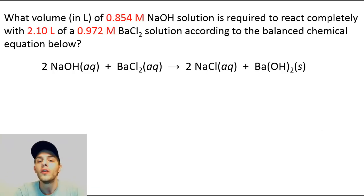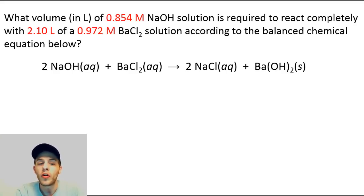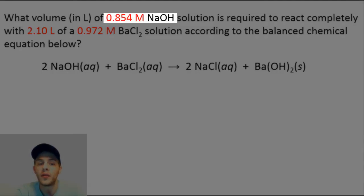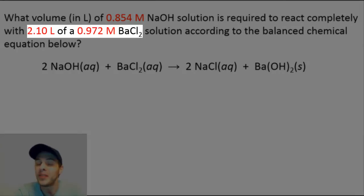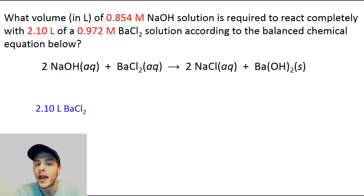Let's do an example. The problem says: what volume in liters of 0.854 molar NaOH solution is required to react completely with 2.10 liters of a 0.972 molar BaCl₂ solution, according to the balanced chemical equation: 2 NaOH + BaCl₂ → 2 NaCl + Ba(OH)₂. We're going to start by writing out the volume of the solution we know the most about. We know the molarity of NaOH, but we know both the molarity and the volume of BaCl₂, so we start with the volume of the BaCl₂ solution — 2.10 liters of BaCl₂.